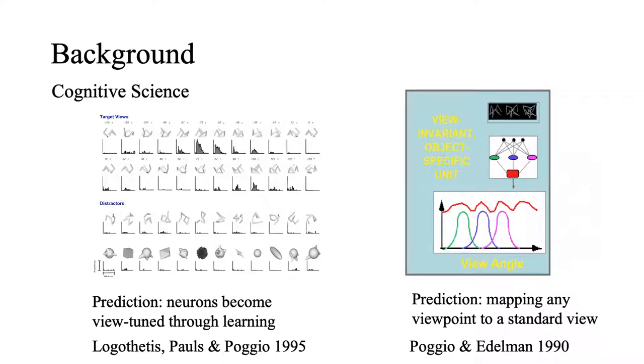in computational vision, they also propose that a network scheme that can approximate the function mapping from any viewpoint to a standard view can recognize the object on which it was trained on from any viewpoint.